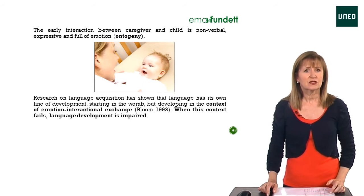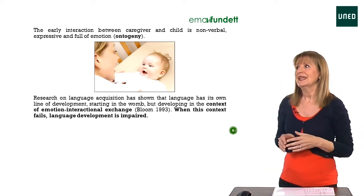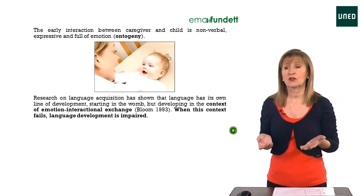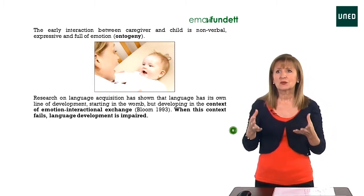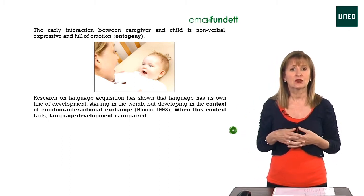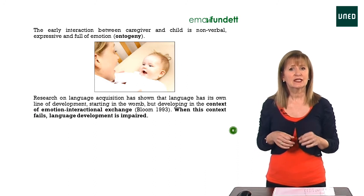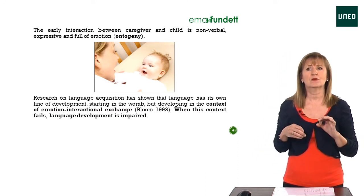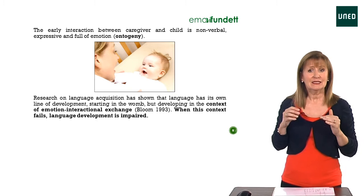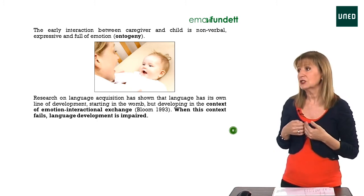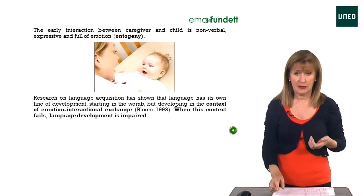Ontogeny studies tell us that the early interaction between caregiver and child is nonverbal, expressive, and full of emotion — that's the first kind of interaction you have with a baby. Research on language acquisition has shown that language has its own line of development starting in the womb, and it develops in the context of emotion in interactional exchange. When this context fails, language development is impaired.